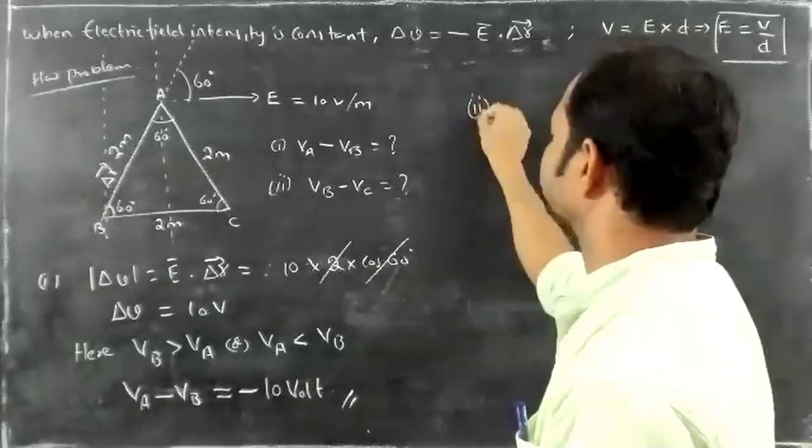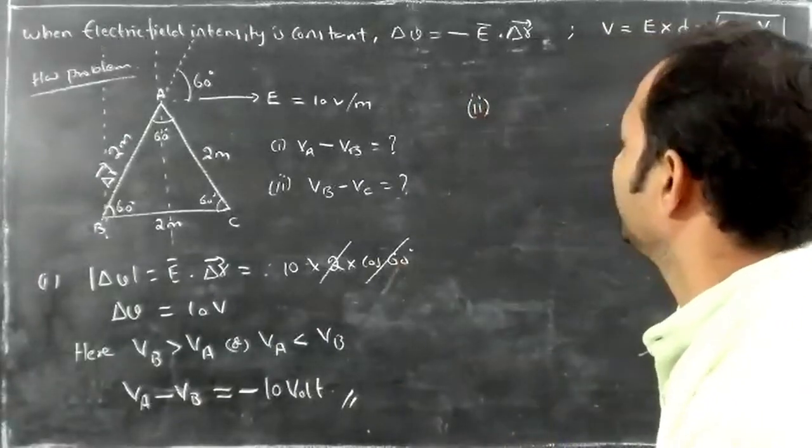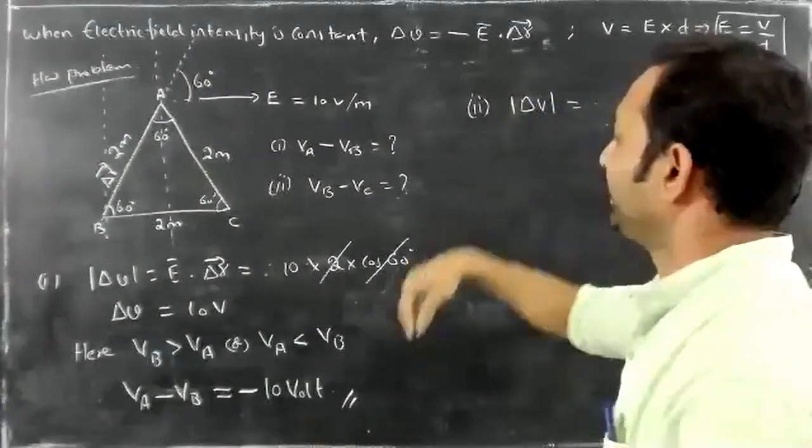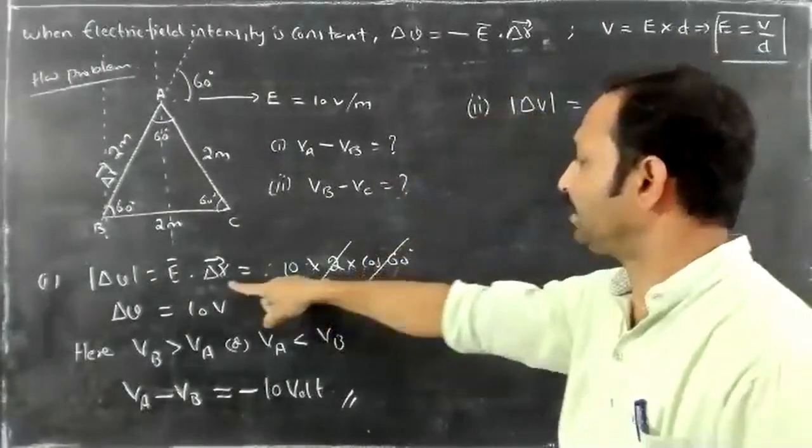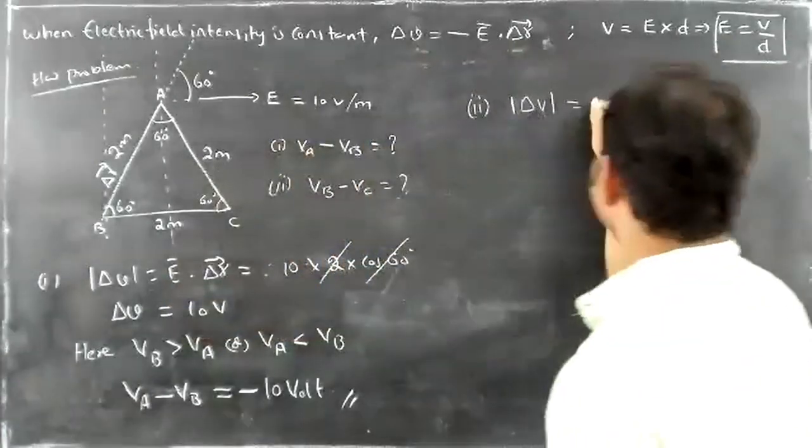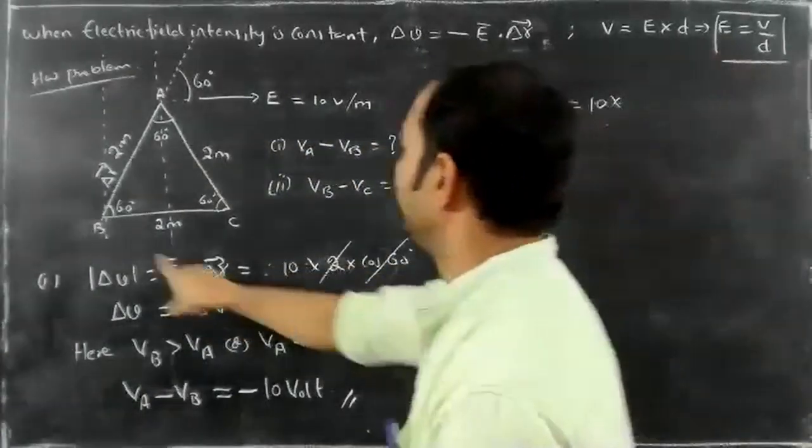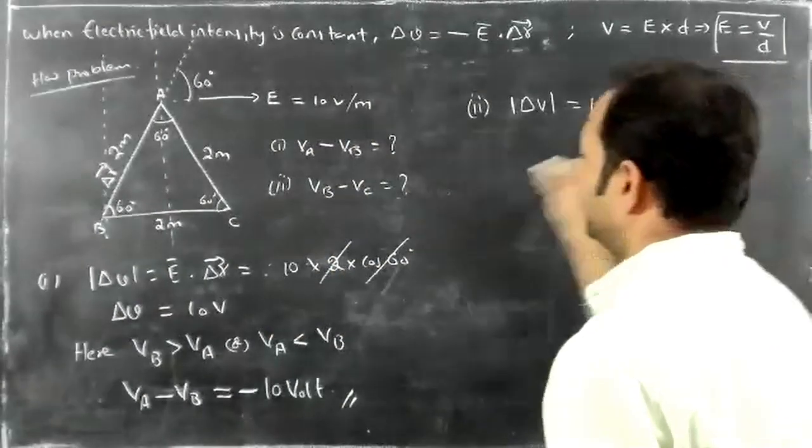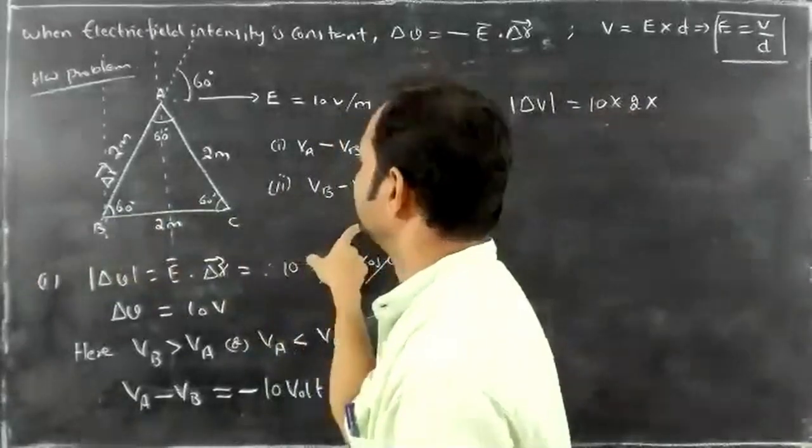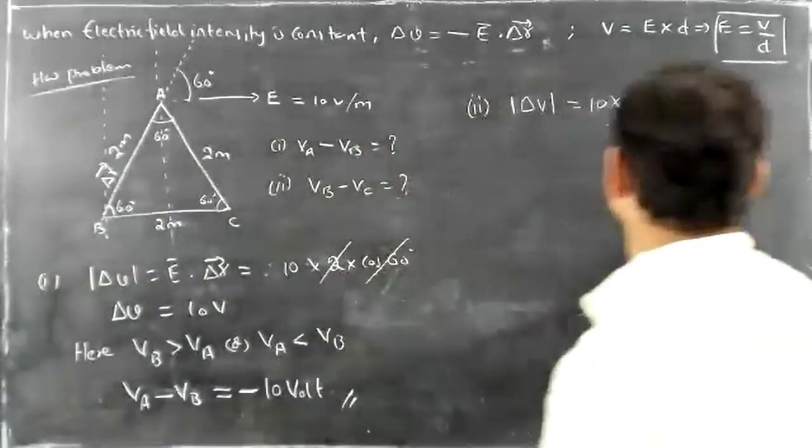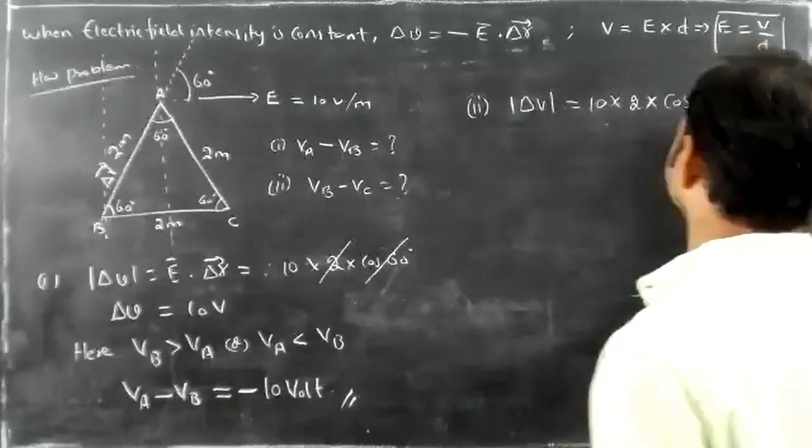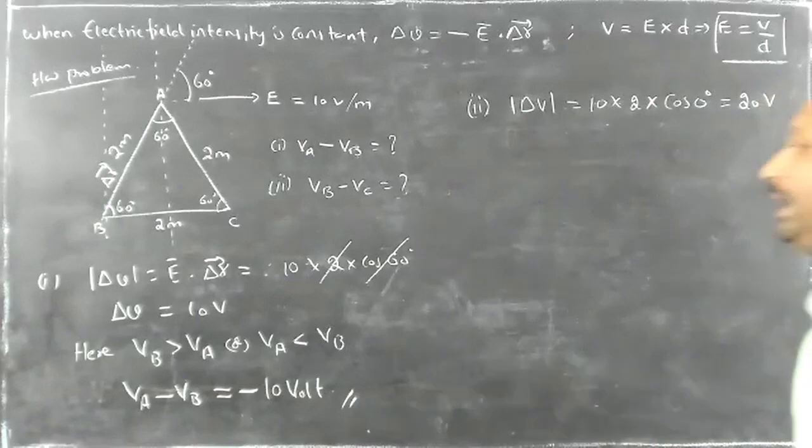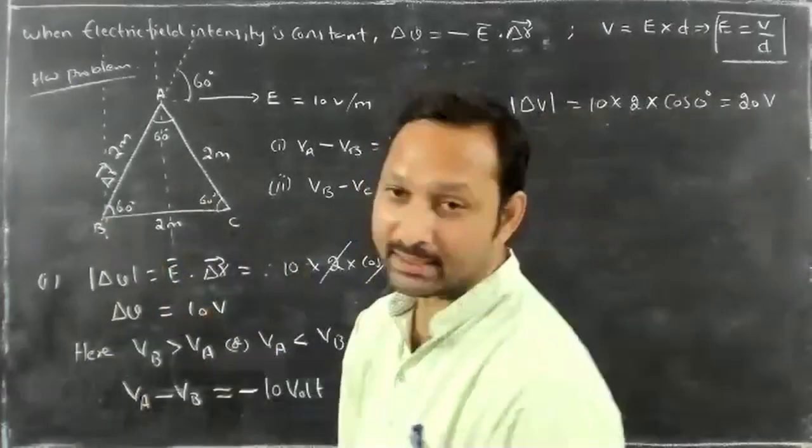Second point, potential at B. First calculation here, it is equal to E, E value is 10 into delta R between B and C value, 2 meters. Right. Delta R and E both are in the same direction. Therefore, cos 0 value is equal to 1 and it is equal to 20 volt.